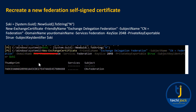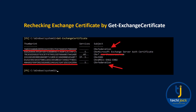The next step is to recreate a new federation self-signed certificate. Run the commandlet to create a new self-signed certificate for the new federation trust. Once you run it, a thumbprint will be generated. You can see that services are not yet assigned, but the subject is CN federation. After creation, run Get-ExchangeCertificate again and you will see two federation certificates — the old one (40a...) and the new one (7ad...).